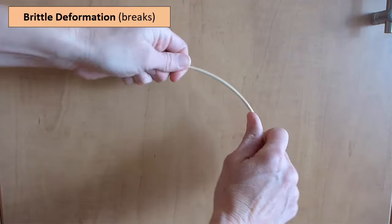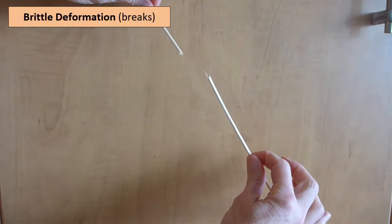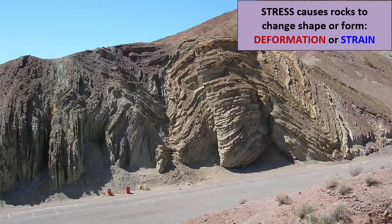Apply some pressure and break the skewer. Brittle deformation. How did we get one type of deformation over the other?